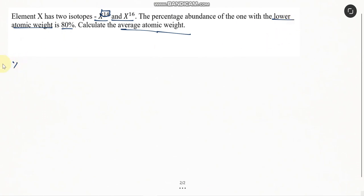We have to find the average atomic weight, which equals (14 × 80) + (16 × 20) divided by 100. So that would be 1120 plus 320, divided by 100.